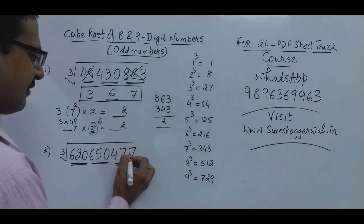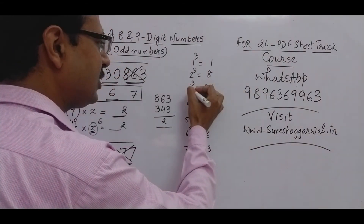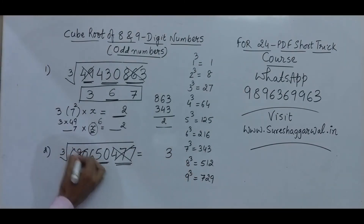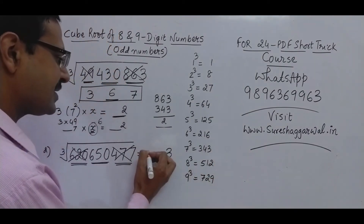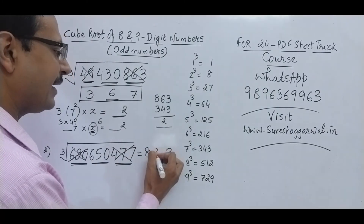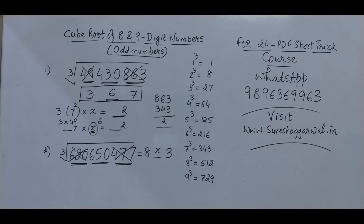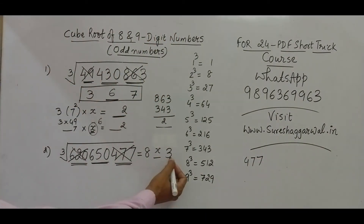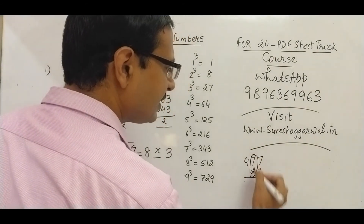Now let's apply this to 620650477. The last triplet is 477. It ends with 7 — and 7 is 3 cubed — so the unit digit of the answer is 3. The first group is 620, which lies between 512 (8 cubed) and 729 (9 cubed). The smaller is 512, which is 8 cubed, so the first digit is 8. The middle digit is x — now I need to find the difference.